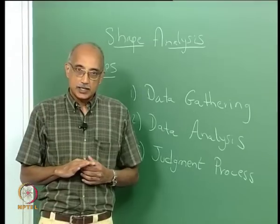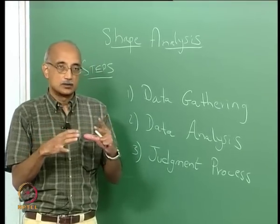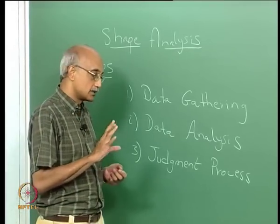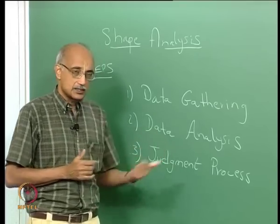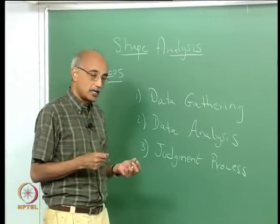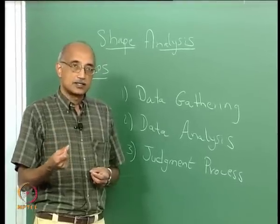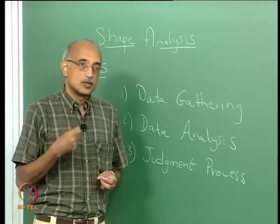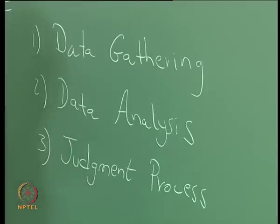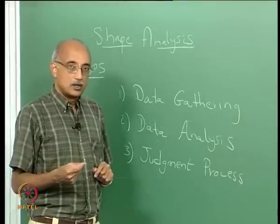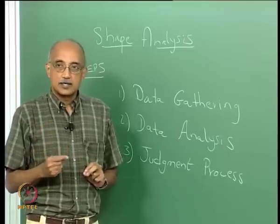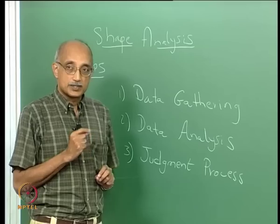Data gathering, as the name suggests, is the first step where you take the particle whose shape you are trying to assess and collect data on it in terms of its surface profile. Data analysis refers to how you then use that data — collecting it is sometimes the easy part; analyzing and extracting useful information can be more difficult. And finally, the judgment process is where you make a call on how much data is sufficient and what depth of analysis is sufficient for the purpose at hand.